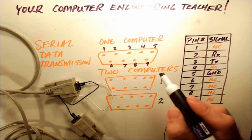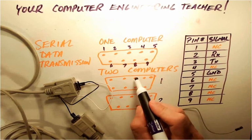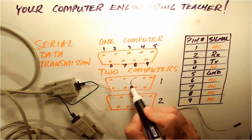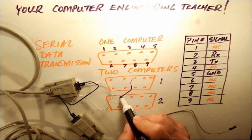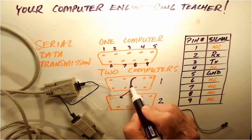So pin 3 is the transmit pin for this computer, computer 1. It's going to be connected to the receive pin on the other computer.